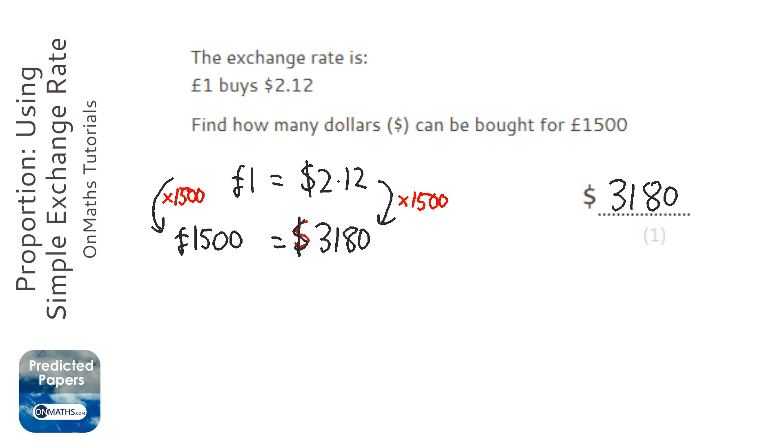it's about $2 to the pound so it's roughly double.